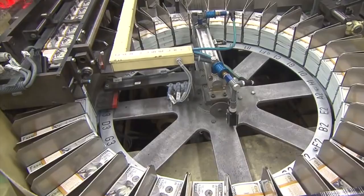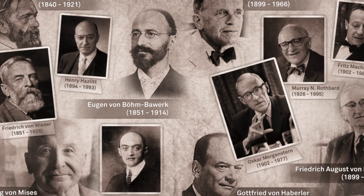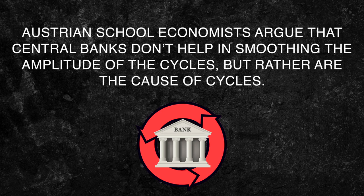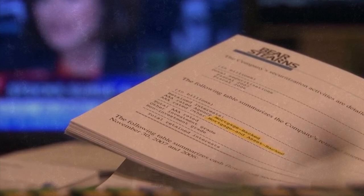While most believe that expansionary monetary policy helps ease crises, the Austrian school begs to differ. Austrian school economists argue that central banks don't help in smoothing the amplitude of the cycles, but rather are the cause of the cycles. In this micro-documentary, we look back at four major busts in the last 100 years and explain how central banks created them.